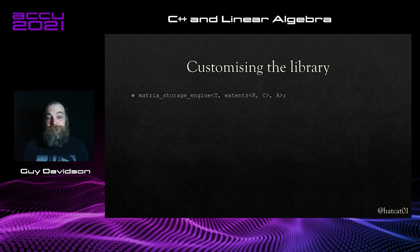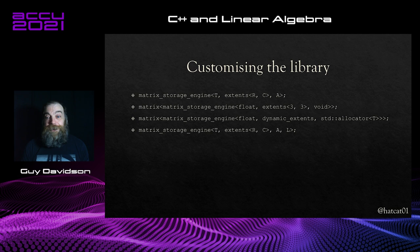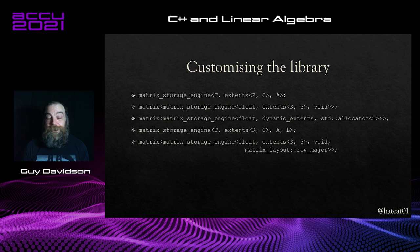During the development of the proposal we were encouraged to take a lead from mdspan in interface design. We are now in the position where mdspan can be used to implement part of the linear algebra library. Our class is starting to firm up: we can now specify a static or dynamic storage engine. We have one more thing to pay attention to — the layout: row major versus column major. Some hardware benefits from particular orientations. P0009 comes to the rescue again with the matrix layout type, providing row major and column major options.